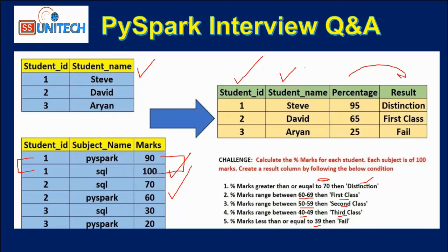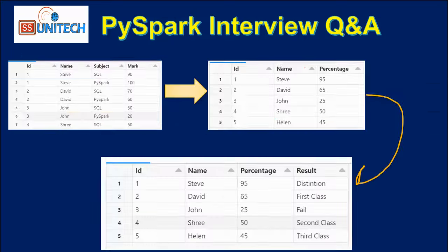What approach will we follow to get this output? These are the steps we will follow. First, we will combine these two dataframes — by using join we will combine them to get a single dataframe.